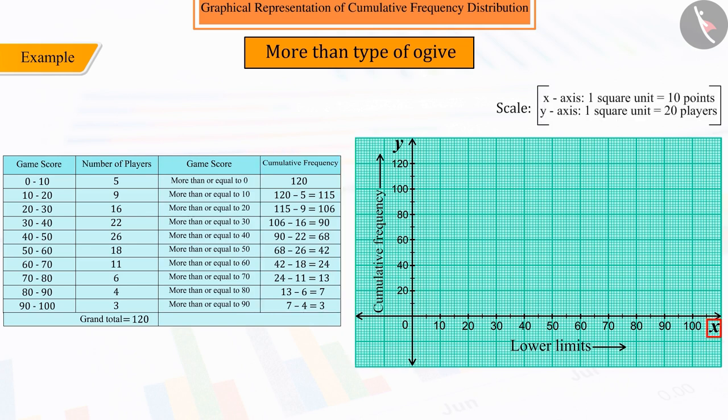Here, on the x-axis, we will take 1 square unit equal to 10 places and on the y-axis, we will take 1 square unit equal to 20 players.